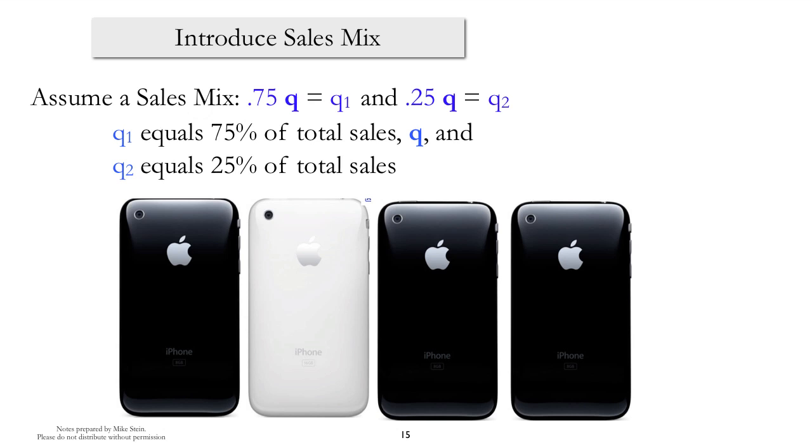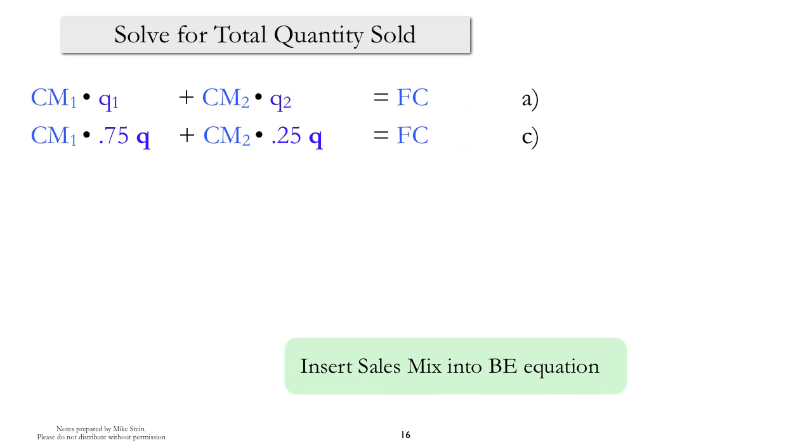So let's take another look at the break-even equation and see whether using sales mix will help us out. So we start off with the break-even equation, and now we substitute into the break-even equation the sales mix assumptions. So what that means is that where we had Q1, we now put .75Q, and where we had Q2, we now have .25Q.